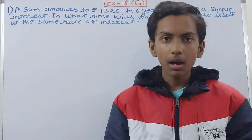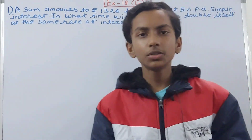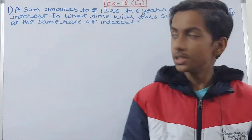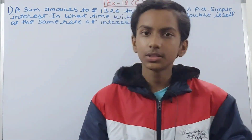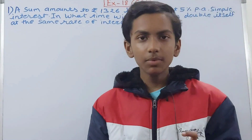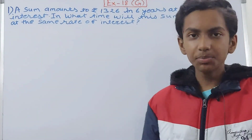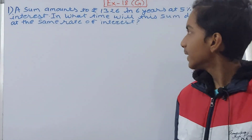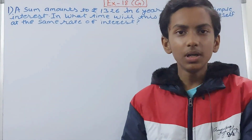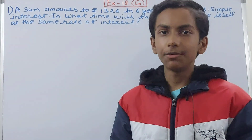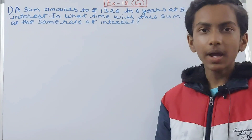So basically, some amount of money — that is our principal — amounts to 1326. The rate is five percent, the time is six years, the amount is 1326, and we do not know the principal right now. Then it asks: in what time will this principal double itself at the same rate of interest? So first we need to find the sum, then we will find the time.